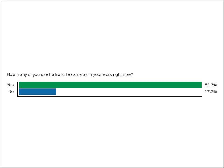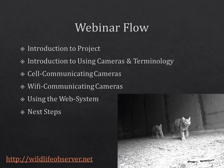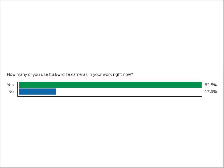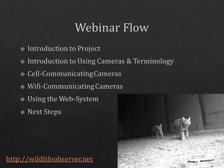There's a lot more information on our website at wildlifeobserver.net, which you'll see at the bottom left of each slide. This is the flow of the webinar: I'm going to introduce the overall project, introduce using cameras and some terminology so we're all on the same page, then talk about two kinds of communicating camera systems — cell communicating and Wi-Fi communicating. I'll then talk about the web system we use, sometimes called web informatics or web database, and finally talk about next steps for the project including how you can participate.